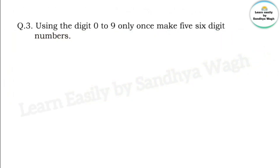Question three: using the digits zero to nine only once, make five six-digit numbers. So let's do it. First number: eight lakh twenty five thousand seven hundred and forty nine — 8,25,749.